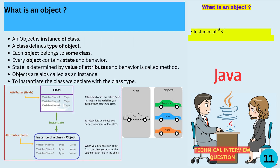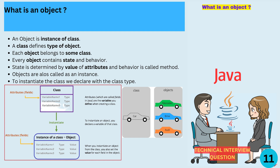Can you explain what an object is in Java and how it differs from a class? An object is an instance of a class. A class defines the type of an object, while an object is a specific instance of that type. Every object has attributes or state which define the object's properties, and behaviors or methods which are actions that the object can perform. Objects are sometimes called instances because they are an instance of a particular class.